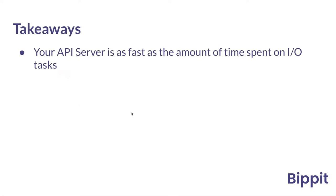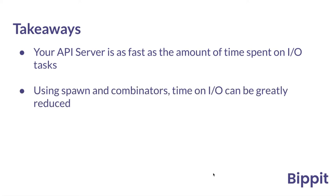The takeaways from building everything in Rust: your API server is as fast as the time you spend on architecting it. From our perspective, almost everything is over the network, so once you've taken care of the actual query speeds, that's the first thing you should look at. You shouldn't start looking at network when your queries are taking seconds to run — optimize your queries and caching first. Then you can look at how much time you're spending on the network, and use Spawn and Combinators to reduce that significantly.